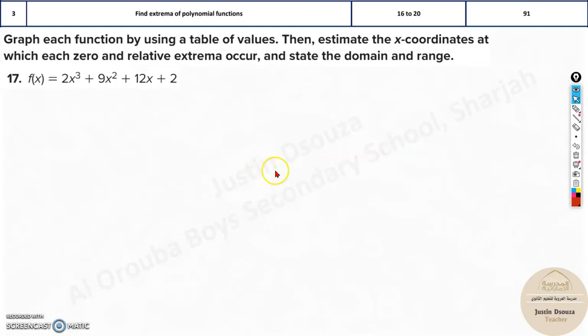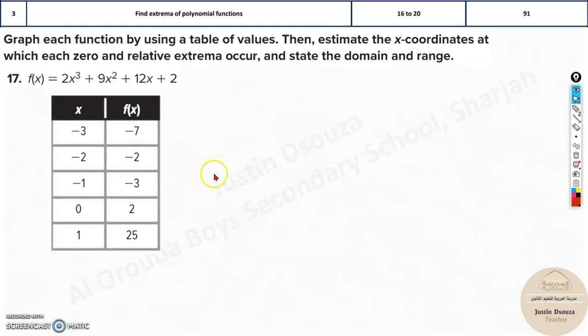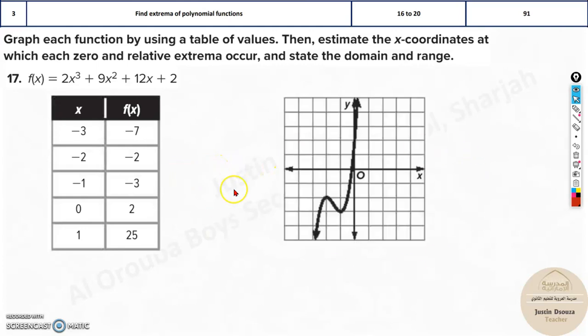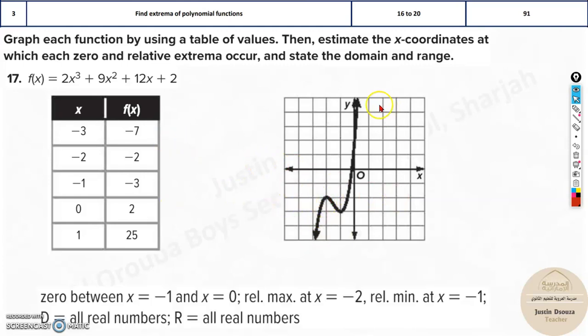Similarly, please do try and solve the others as well. It's very straightforward. Just make sure you put everything correctly in the calculator, and you can easily solve them up. Once you know the graph, which is the correct graph, you can easily write the relative minima maxima and the domains and everything.